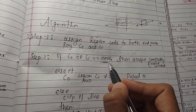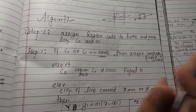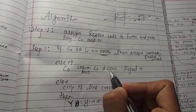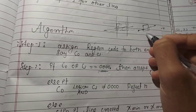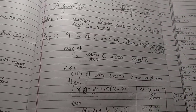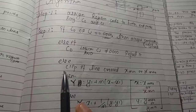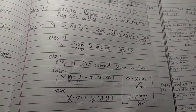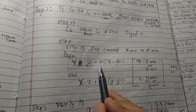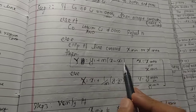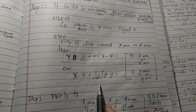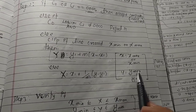If the region code is zero zero zero zero, the line is inside. If the bitwise AND of the two endpoint region codes is not zero, the line is completely outside. For intersection, we use the formula: y equals y1 plus m times (x minus x1), and x equals x1 plus (1/m) times (y minus y1), where x1, xmax, xmin are the window boundaries.